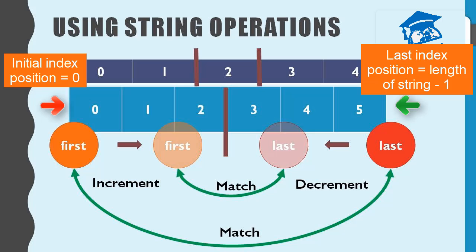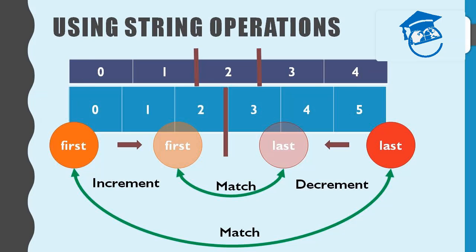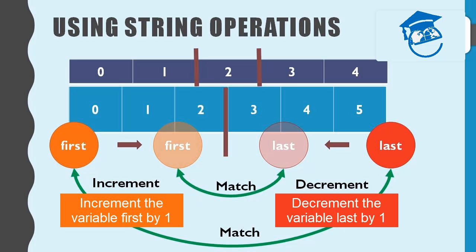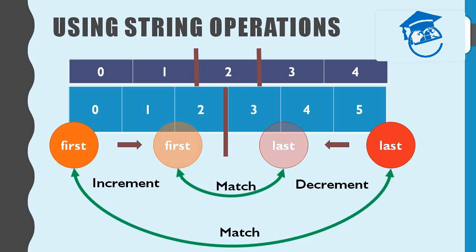We need to compare the two characters represented by the index positions of 'first' and 'last'. If they match, our first step is okay, because in palindrome words the characters at each end should be the same. In the next step we increment 'first' and decrement 'last', then match the characters again. We repeat this process until the two variables reach the middle point, or until a match fails.